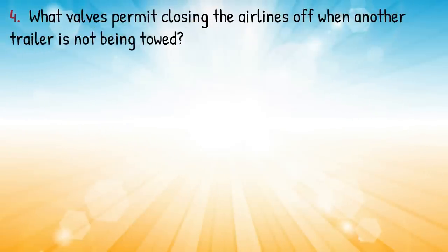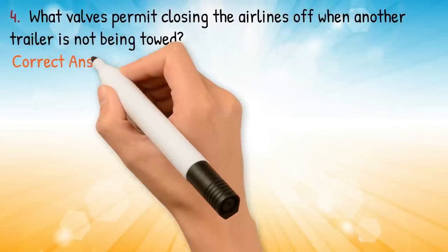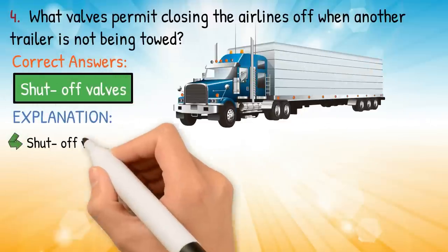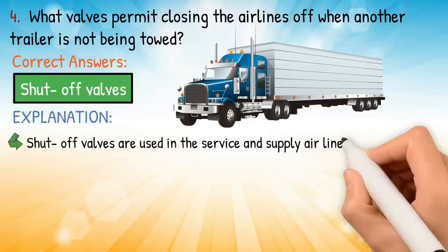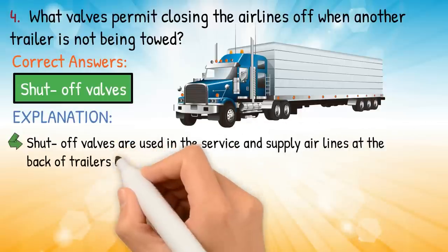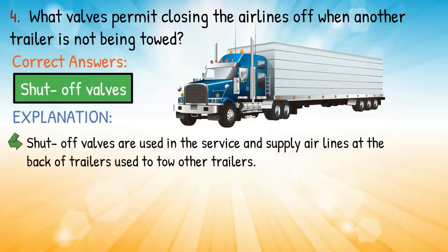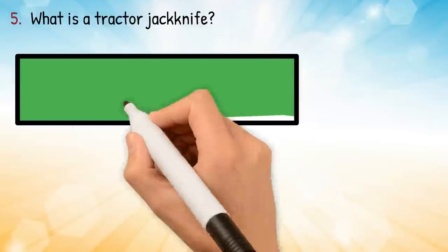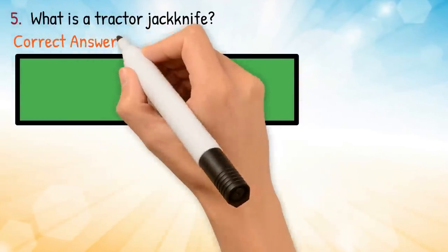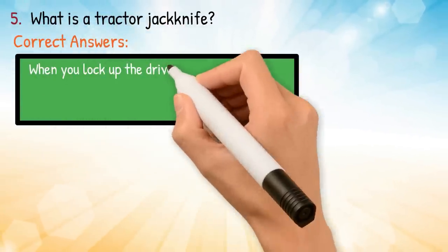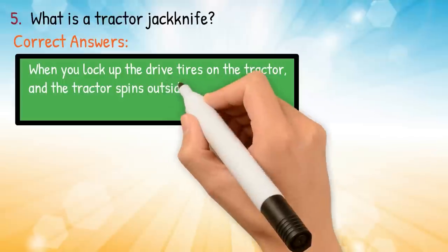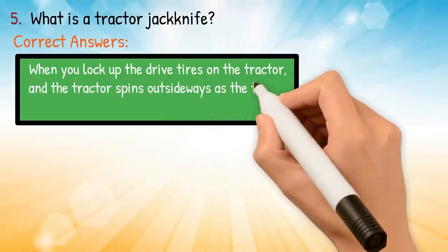Question four: what valves permit closing the airlines off when another trailer is not being towed? Correct answer: shut-off valves. Explanation: shut-off valves are used in the service and supply airlines at the back of trailers used to tow other trailers. Question five: what is a tractor jackknife? Correct answer: when you lock up the drive tires on the tractor and the tractor spins out sideways as the trailer continues to push forward.